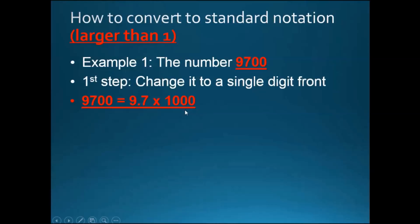You can check this on your calculator easily. And the second step is to count the number of zeros in this number over here. For example, 1000 equals three zeros. And lastly we can convert this 1000 into 10 to the power of 3 because there are three zeros in here.